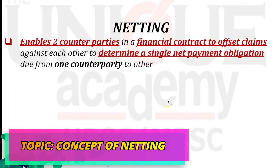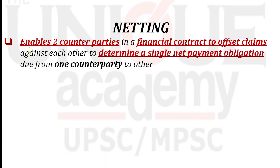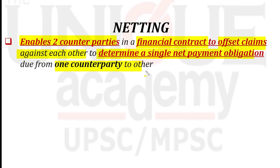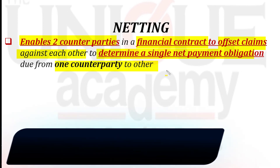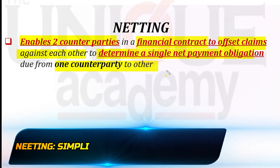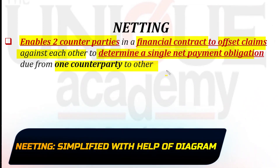Let's see the economic definition of netting. It enables two counterparties in a financial contract to offset claims against each other to determine the single net payment obligation from one party to the other. Obviously this is difficult for non-economics background students to understand, so we will try to understand netting in simple words with the help of a diagram.